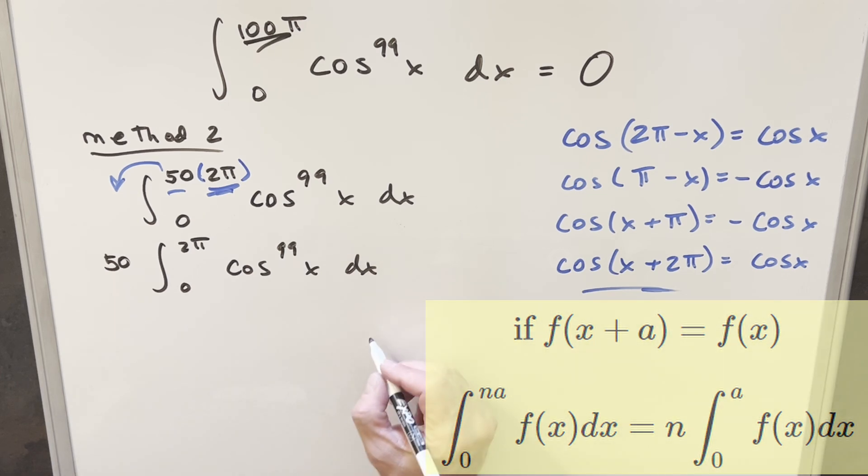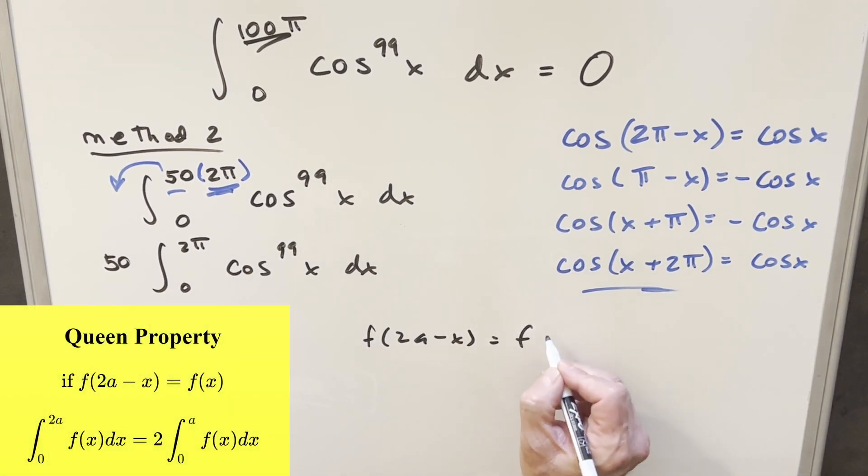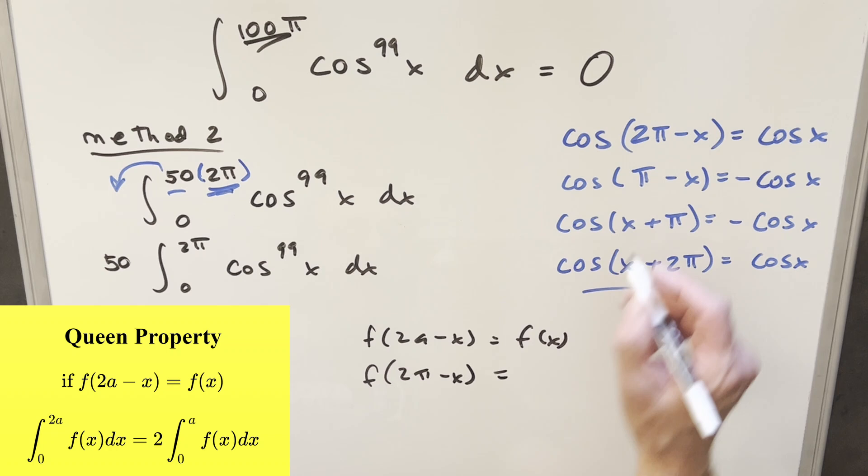So the principle is true and we can take the 50 out front of the integral. And then next what we can do is use King's principle on it, where we're going to want f of 2a minus x equal to f of x. So that's going to be f of 2 pi minus x. So we need this top one right here, cosine 2 pi minus x. But that's going to be cosine x.